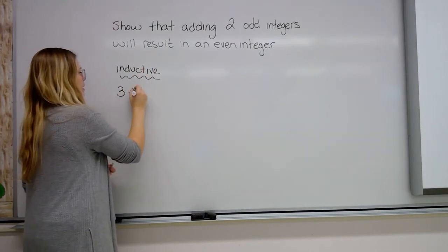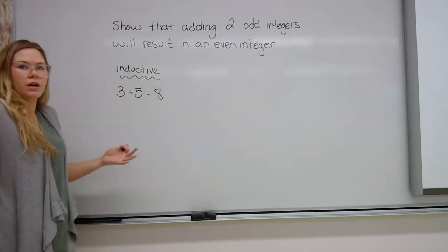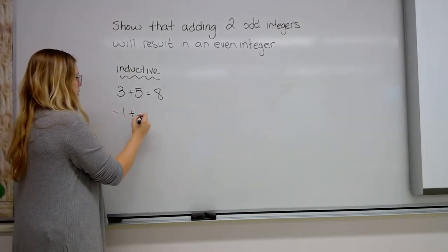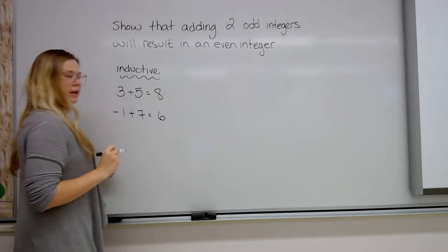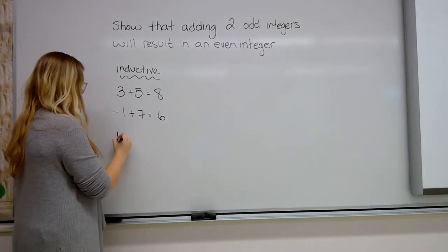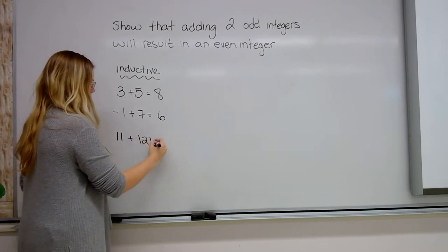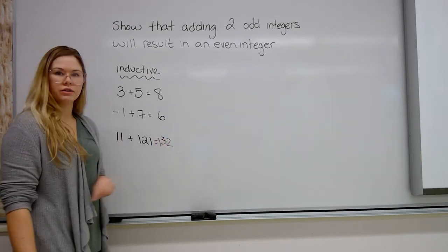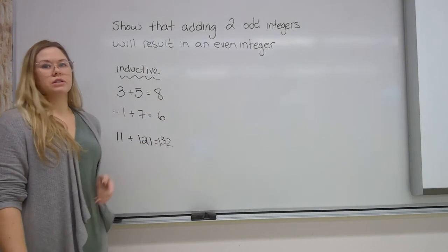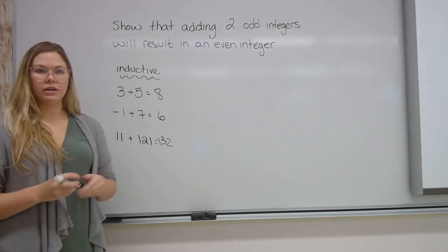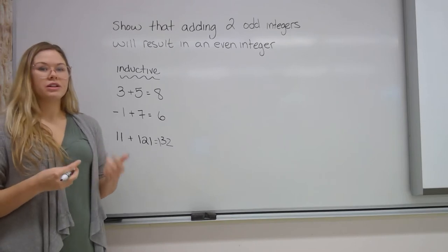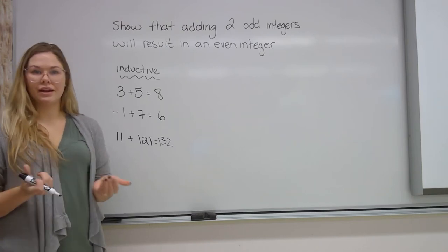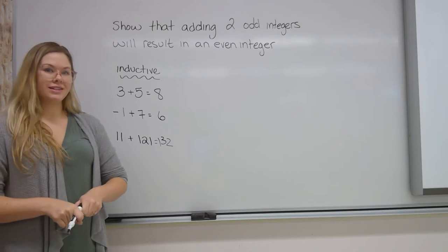Let's go with 3 and 5. When we add those together we get 8. Let's try a negative number — negative 1 plus 7 equals 6, that's an even number. Let's try 11 and 121 — that gives us 132, also an even result. Based on inductive reasoning, I can see that the pattern is holding: when I add two odd integers together I get an even result. However, unless I'm willing to check every single possible combination of integers, I can't actually say this is always going to be true. This is where deductive reasoning is going to come in.